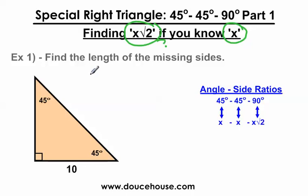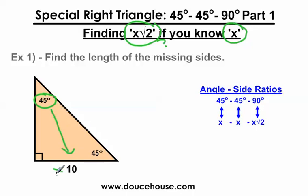Hopefully that will help you understand what to do here. Now remember, the 45-45-90 triangle is named the 45-45-90 triangle because the angle measures in the triangle are 45-45-90 degrees. There's a special ratio between the sides using the 45-45-90 angles, and this is always going to happen no matter how big or small the triangles are. Since these angle measures are the same, the sides opposite those angles are going to be the same as well.